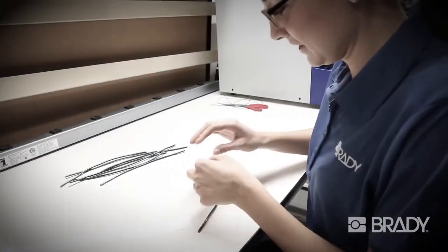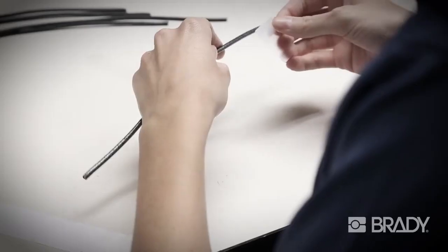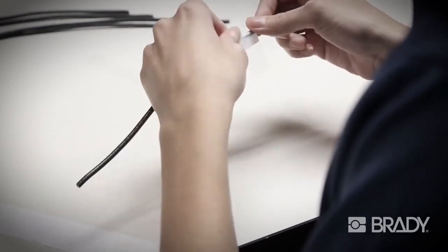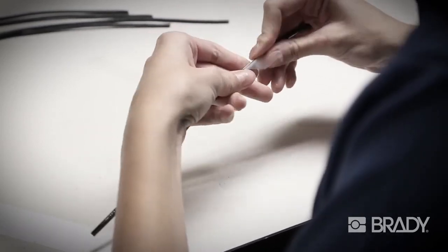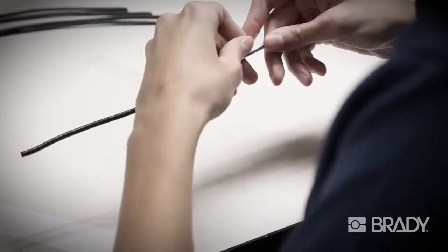Wire labeling can be a slow, tedious process. Over time, operators can improve their output, but even the most seasoned labeler can't match the speed of the Raptor A6500.